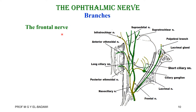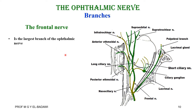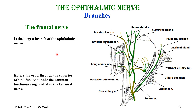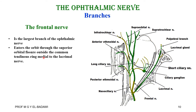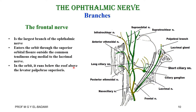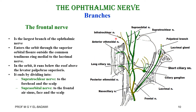The frontal nerve — one of the two largest branches of the ophthalmic nerve along with the nasociliary — enters the orbit through the superior orbital fissure outside the tendinous ring, medial to the lacrimal nerve. In the orbit it runs below the roof, directly above the levator palpebrae superioris, and ends by dividing into the supratrochlear and supraorbital nerves.